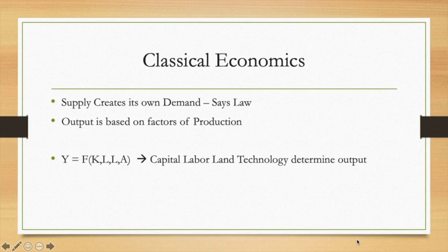Prior to this, the main type of economics was classical economics, which said that supply would create its own demand — called Say's Law — meaning that if you had the ingredients to make the output, the price didn't matter. But after the Great Depression people realized that if nobody wants to buy the goods, suppliers will not make them. That is where the Keynesian, or demand side, of macroeconomics started.